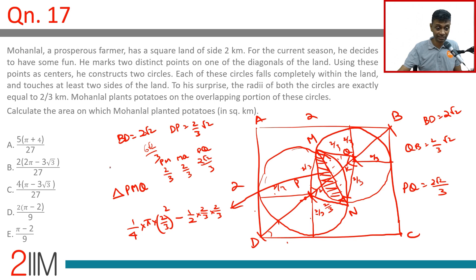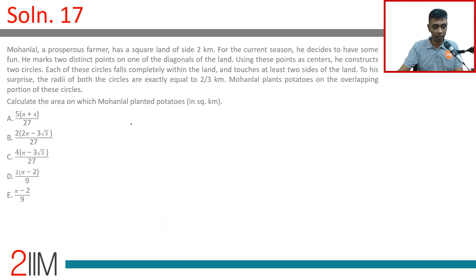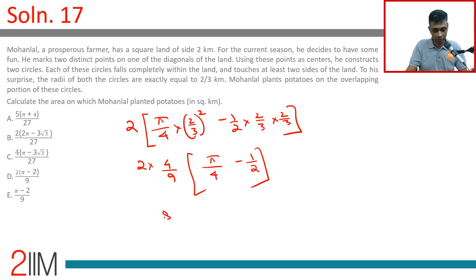But our good man is not just cultivating this. He's cultivating twice of this. Wonderful. Or we're looking to calculate two times of π/4 × (2/3)² - 1/2 × 2/3 × 2/3. Take away the (2/3)² outside: 2 × 4/9 × (π/4 - 1/2). That's 8/9 × (π/4 - 1/2). Two-ninths into (π - 2). Thankfully, that choice exists. Otherwise, we would have spent so much time on a wild goose chase.